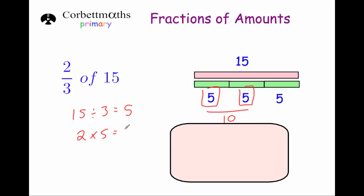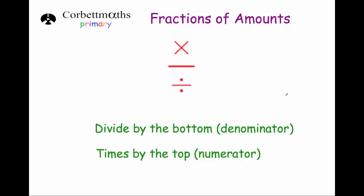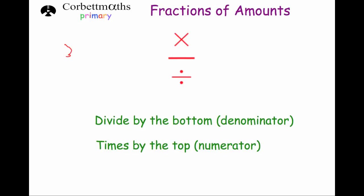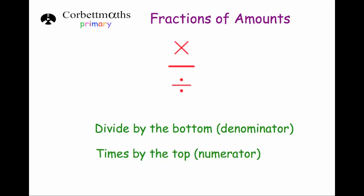So if we want to work out a fraction of a number, we divide by the bottom and times by the top. For instance, if I wanted to work out 3 sevenths, I would divide by 7 and times by 3. For the ones we looked at earlier — like a quarter — we divided by 4, but there's no point in times by 1, because you just get the quarter anyway.